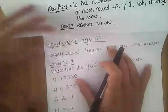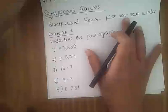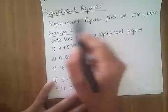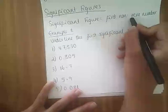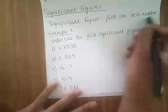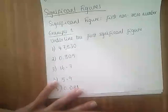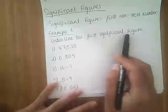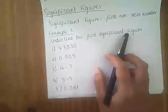Today we're going to talk about significant figures. The first significant figure is the first non-zero number. We don't start counting our significant figures until the first number that is not zero. To start with, we're just going to look at identifying significant figures before we then look at rounding to significant figures.